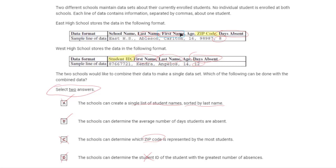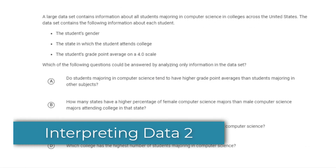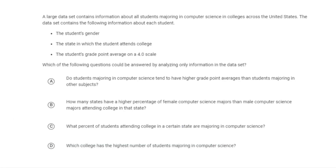This is probably the most common format for data questions on the AP CSP exam. Instead of a chart with actual table data, they describe what the data is. This data set contains information about all students majoring in computer science at colleges across the United States. The data includes gender, the state in which they attend college, and grade point average on a 4.0 scale. The question asks which pieces of information can we get only using this data set.